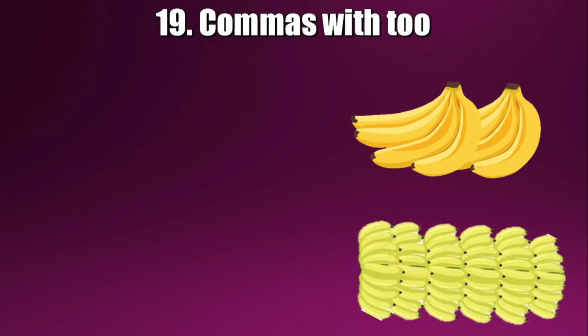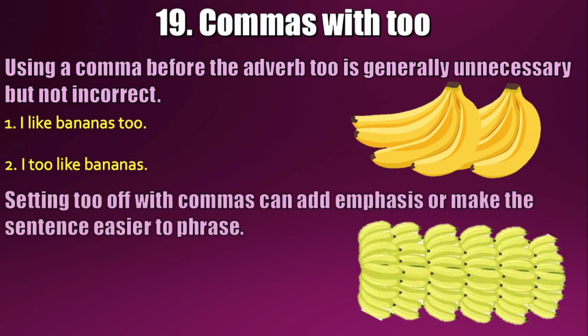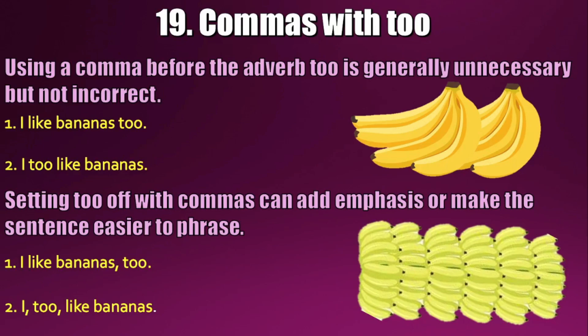The nineteenth use: commas with 'too.' Using a comma before the adverb 'too' is generally unnecessary but not incorrect. 'I like bananas too' and 'I too like bananas' need no comma. However, setting 'too' off with commas can add emphasis or make the sentence easier to parse: 'I like bananas, too' or 'I, too, like bananas.' We have come to the end of our presentation.